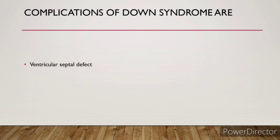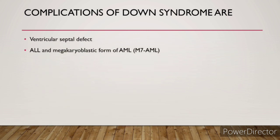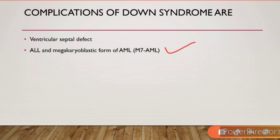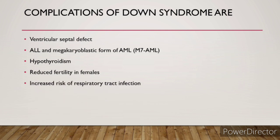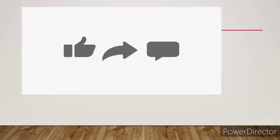Complications of Down syndrome include ventricular septal defect, which is the most common, and leukemia — specifically acute lymphocytic leukemia (ALL) and the megakaryoblastic form of AML are most commonly associated with Down syndrome. Additional complications include hypothyroidism, reduced fertility in females, and increased risk of respiratory tract infections.